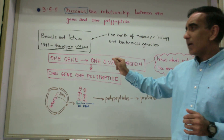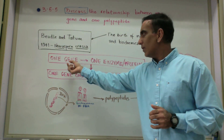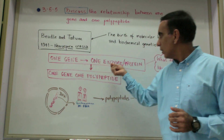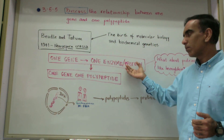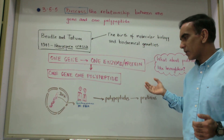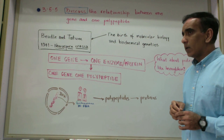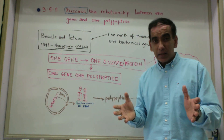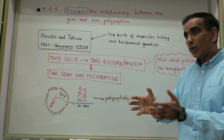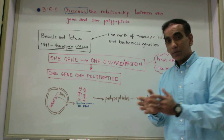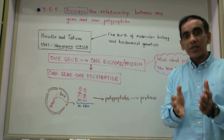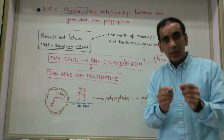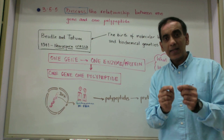At that time, Beadle and Tatum presented what was known as the one gene one enzyme, or one protein, hypothesis. This was based on the idea that one gene would code for one protein, remembering that the understanding of the structure of DNA and protein synthesis was limited at that time.